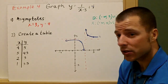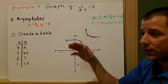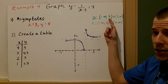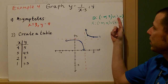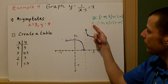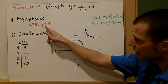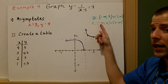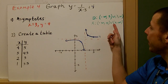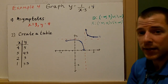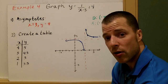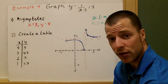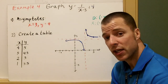For the domain and range: we can use all values of x except 3, so the domain is negative infinity to 3 union with 3 to infinity. For the range, we can get close to 4 but never hit it, so the range is negative infinity to 4 union with 4 to infinity. That's graphing rational function families when you have an h and k value. We'll see you next time for Section 8.3.